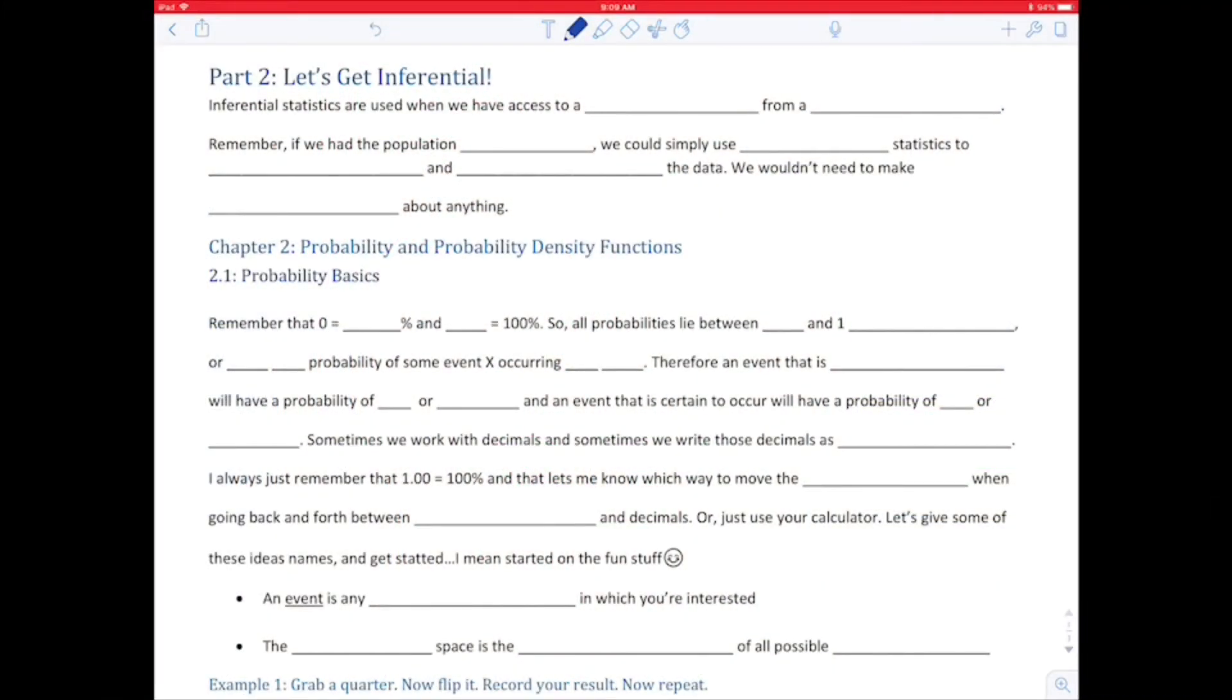Hey there, it's Shanna Maccheck Myers coming to you live from San Diego. We're on the second part of our course and it's all about inferential stats. So inferential statistics are used when we have access to a sample from a population. Remember, if we had the population data, we could just simply use good descriptive statistics to organize and illustrate the data. We wouldn't need to make inferences about anything.